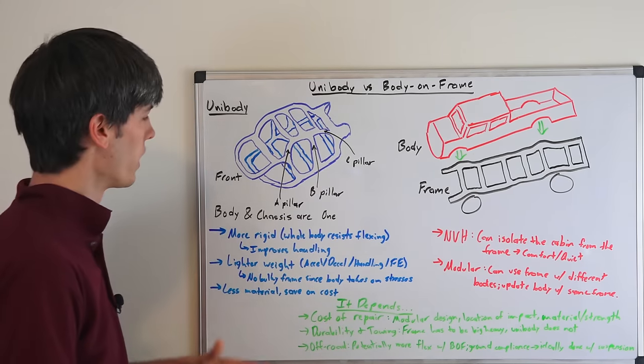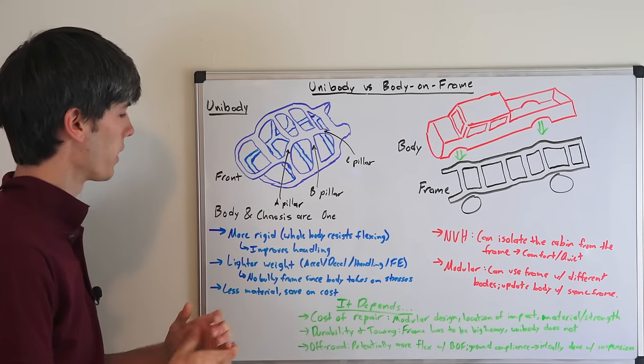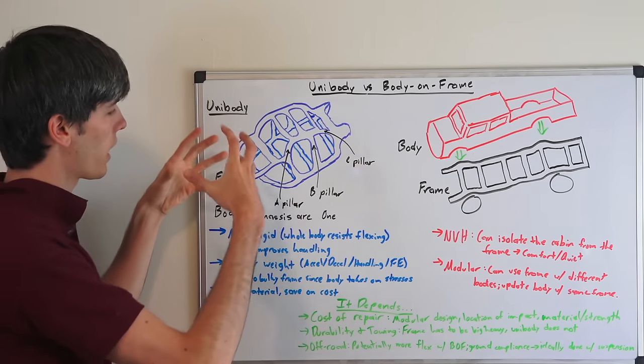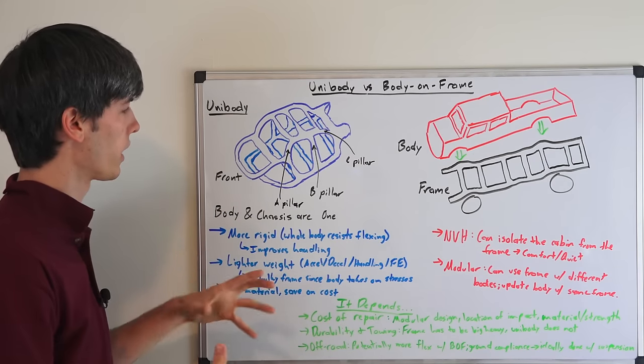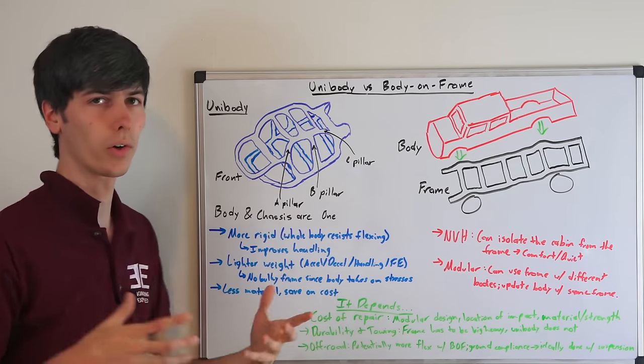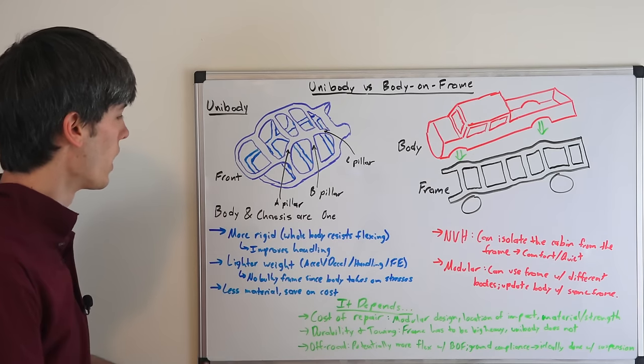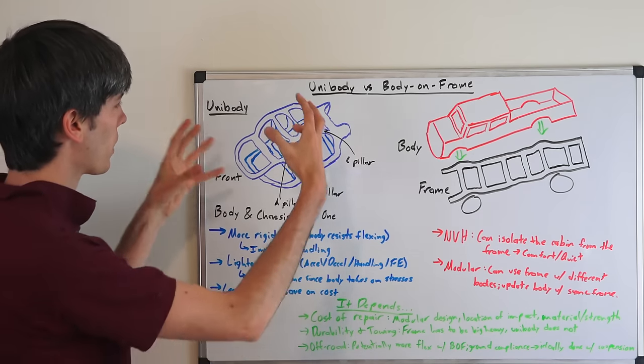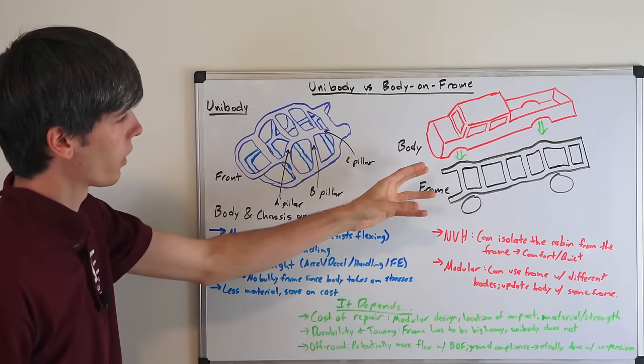And so what is the advantage of a unibody? Well, it's more rigid because the entire body is resisting that flexing as you're going over different road surfaces, driving in different road conditions. And so that improves handling because the body is so rigid.